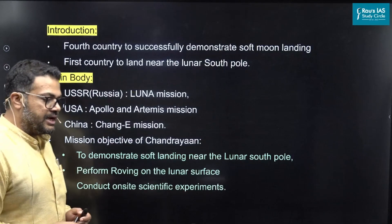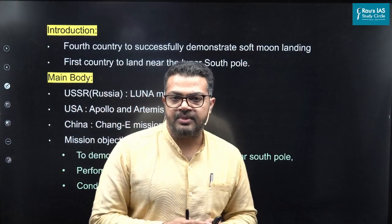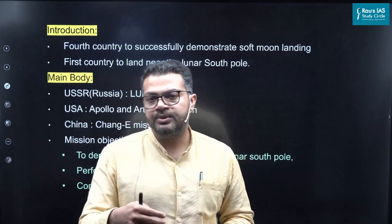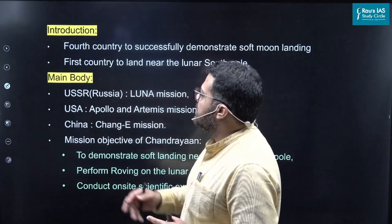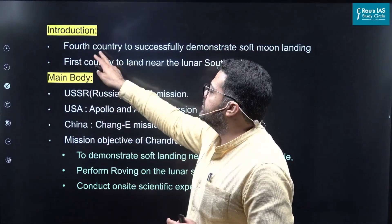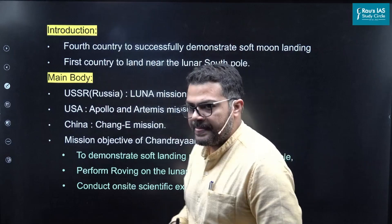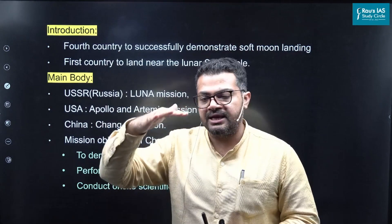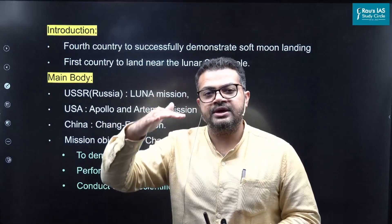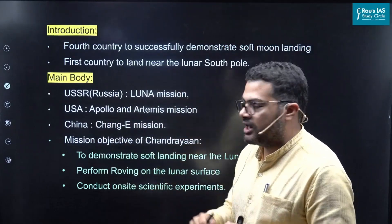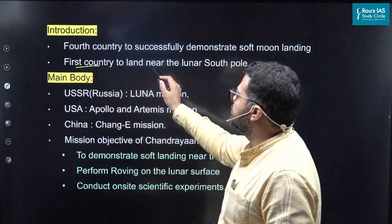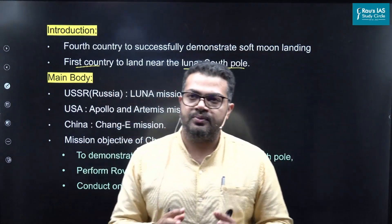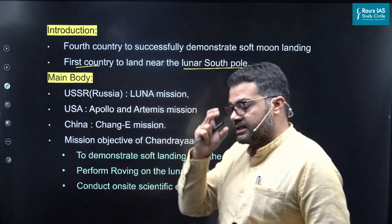Because this question has four things demanded, I would suggest writing the shortest possible introduction. India has recently become the fourth country to successfully demonstrate soft moon landing. Soft moon landing means when something lands in a very calm, controlled manner at walking speed without causing any damage to the hardware internally. India has also become the first country to land near the lunar south pole — we landed somewhere around 300-350 kilometers away from the lunar south pole.